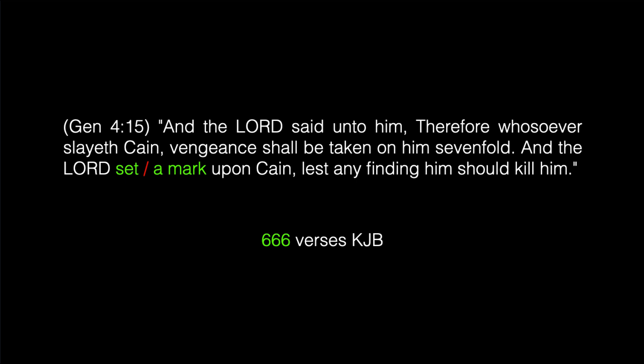Let's look at Genesis 4:15: 'And the Lord said unto him, Therefore whosoever slayeth Cain, vengeance shall be taken on him sevenfold. And the Lord set a mark upon Cain, lest any finding him should kill him.' The word 'set' combined with the phrase 'a mark' appears in 666 verses of the King James Bible. With regard to Psalm 37:37 — 'mark the perfect man' — Jesus was marked: He was marked in His feet, in His hands, in His forehead. Here we have 666 encoded in Genesis 4:15 — the Lord setting a mark upon Cain.